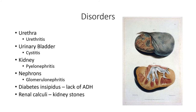Now let's talk about disorders. The urethra's job is to transport urine to the outside of the body. If it becomes inflamed, often with bacteria, that condition is called urethritis. Urinary bladder inflammation is called cystitis, which can also be caused by a UTI or bacterial infection. Kidney inflammation can be called pyelonephritis, caused by bacteria that travel up the urethra, through the urinary bladder, up the ureter, and to the kidney.